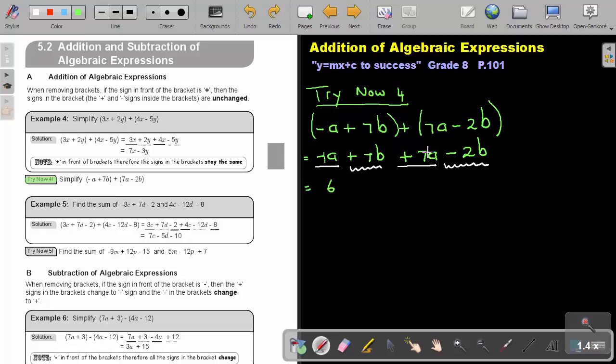So what do I do if the signs are different? I subtract, so that will be 6. And I take the sign in front of the biggest movement, which was positive. And I just rewrite the A. And then 7B minus 2B, that will just be equal to 5B. And that's my final answer.